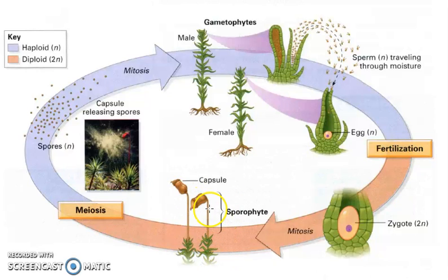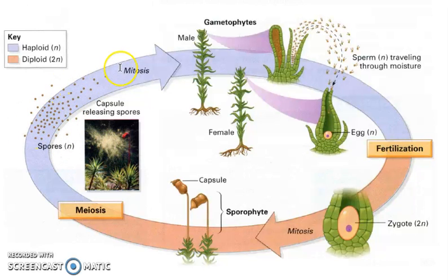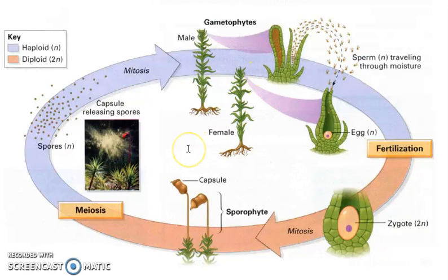This is in the sporophyte stage, so it has a complete number of chromosomes during this stage. The capsule up here at the top of the females will be producing a bunch of spores, and at some point they will burst open. The wind will carry those spores and they will land all over the forest, but if they land in a nice wet environment they will grow up and become male and female gametophytes once again, and the life cycle will just keep repeating.